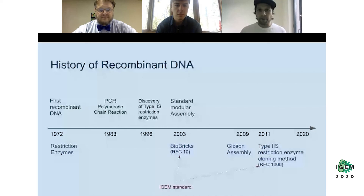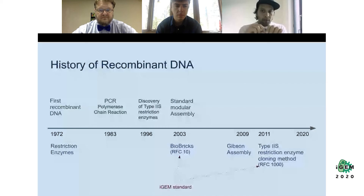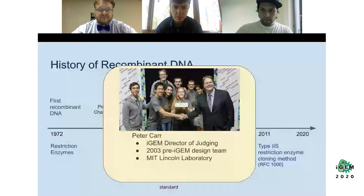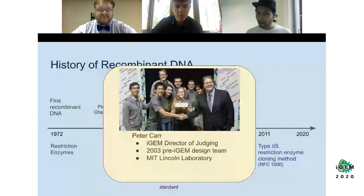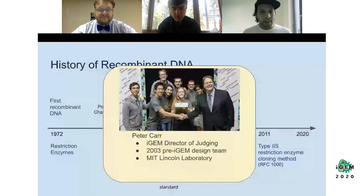Around the same time, they found a process to put DNA into bacteria and observed that the bacteria would create real clones with this DNA. Now let me introduce Peter Carr, the iGEM Director of Judging. Peter has been through the history of recombinant DNA within iGEM, including what he calls the dark times of the Gibson Assembly rebellion against the BioBricks.